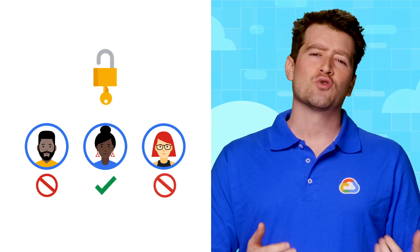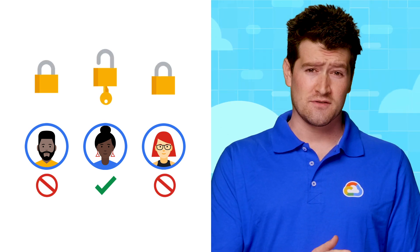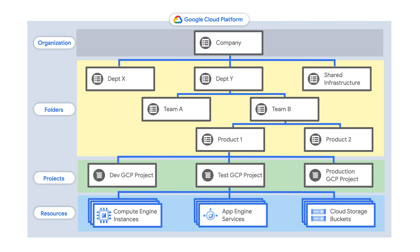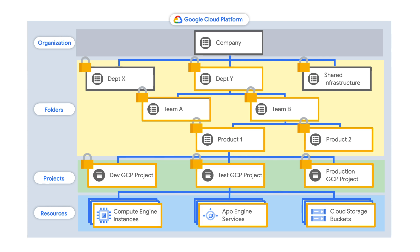How do you control access to cloud resources? Once the resource hierarchy is in place, you can apply security permissions at each of these levels. These permissions are then inherited by any child objects in the hierarchy. For example, if you get full admin privileges on Department Y's folder, you will have full admin privileges on all of the projects and resources below it. These hierarchies can be as complex or as simple as your organization requires.